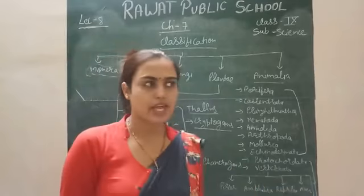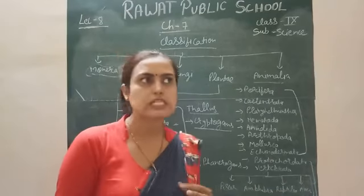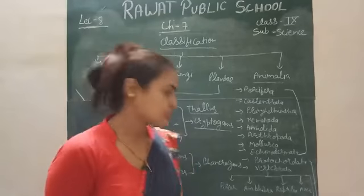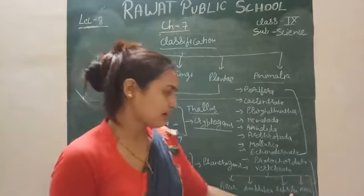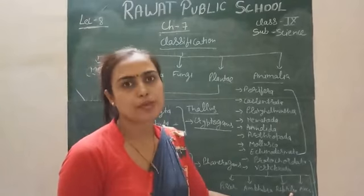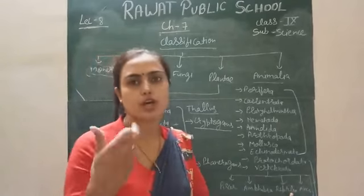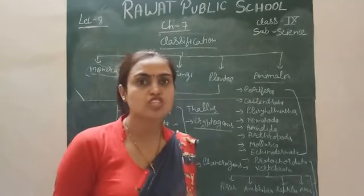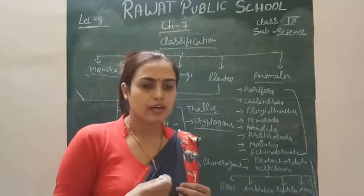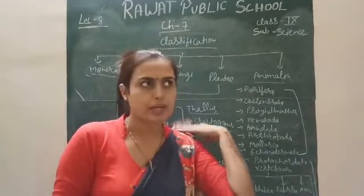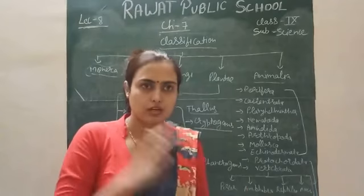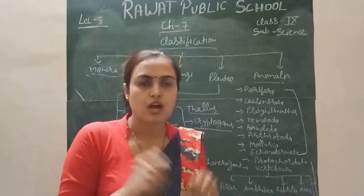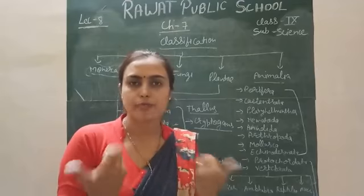Next are Aves — birds which have feathers, wings, and one ovary. They are also oviparous. Pisces, Amphibia, and Reptilia are cold-blooded — meaning they have the capability to change their internal body temperature according to the external environment. But Aves and Mammalia are warm-blooded animals — they do not change their internal temperature; instead they change their body mechanisms to maintain it, like sweating in summer and shivering in winter, which generates heat to maintain internal body temperature.